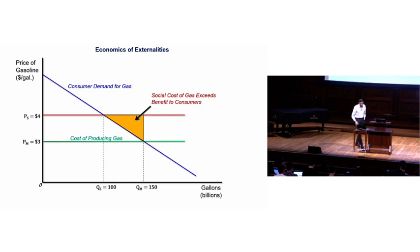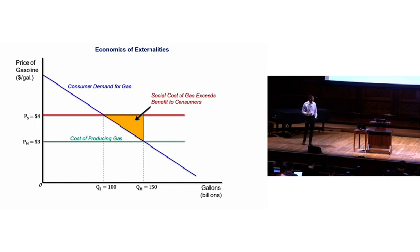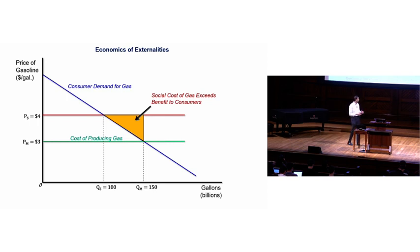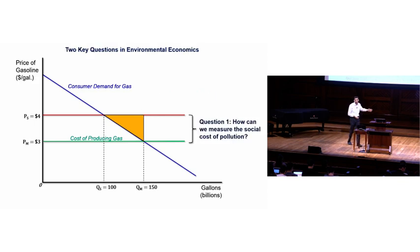The first question we're going to focus on is: how can we measure the social cost of pollution? In the diagram, that's the difference between the red line and the green line — I made up one dollar here, but how can we estimate what that actually is in the data? And second, what policies can we use to reduce pollution and improve the environment — how can we get from 150 billion down to 100 billion gallons? Those are the two sets of questions I'll focus on.